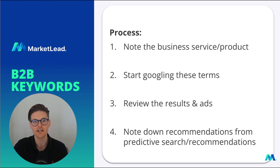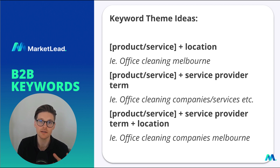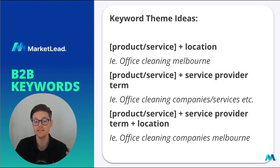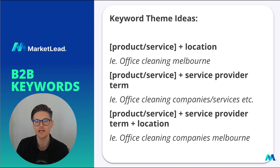So, keyword theme ideas — this is what I do with every single B2B client at MarketLead. This works all the time because it really captures the intent of the user with keyword themes that always go along with someone actually looking to buy. Firstly, product or service plus location. So if someone's looking for 'office cleaning Melbourne', I know they're actually looking for an office cleaner in Melbourne. Location is a really high-intent way to identify someone who's proactively looking to purchase a service.